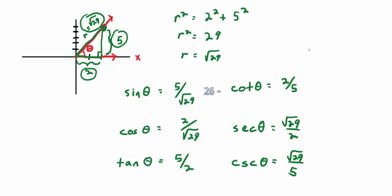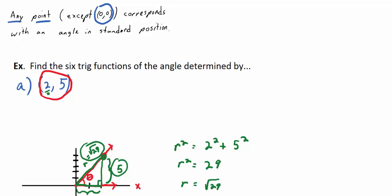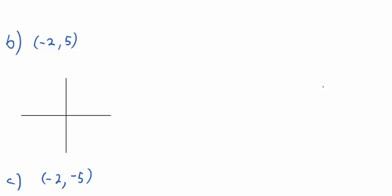Now the same directions — find the six trig functions — but the point changes to (-2, 5). The distances are the same, but now which quadrant will (-2, 5) be in? The second quadrant. So go left 2 and up 5. The initial side coincides with the x-axis; the terminal side is a ray from the origin through (-2, 5). The angle theta is this large angle in the second quadrant.